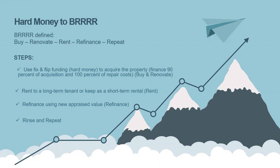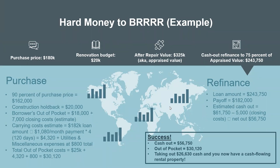Most of us don't have a bunch of cash lying around, so we're always trying to leverage and recycle our money. This is the tool many investors use to grow their portfolios and net worth. Let's get into a hard money to BRRRR example. In this assumption, you've found a really good deal: purchase price is $180,000, renovation budget is $20,000, and the ARV — after repair value — is $325,000. I used a 90% of purchase price with 100% of repair costs structure for this example.